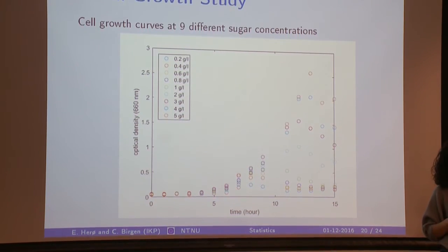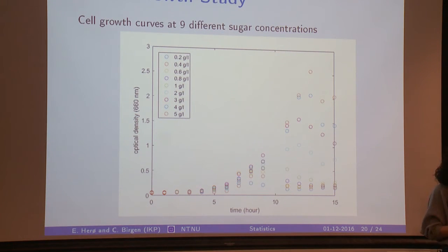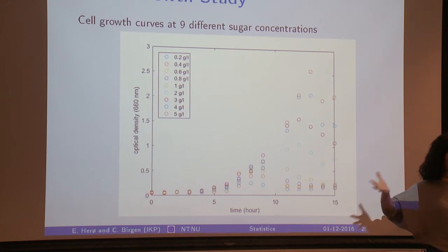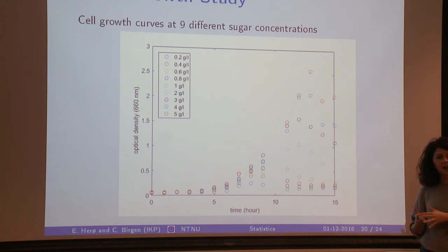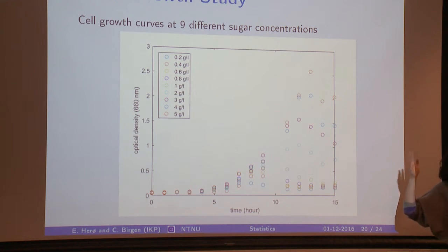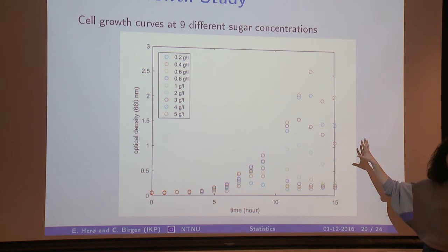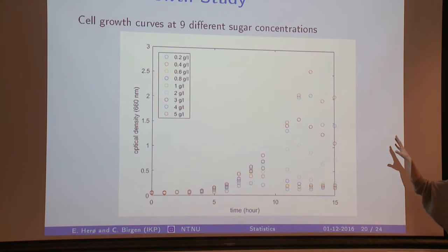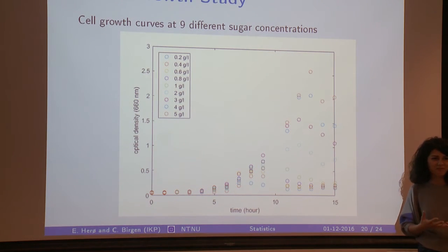I work with biofuels, so the chemicals are produced by cells. Cell growth is very important for my research and I mostly work with them in the lab. To understand how they behave at different sugar concentrations — because they eat the sugar and produce chemicals — I've been doing many experiments. At nine different sugar concentrations I measured their growth over 15 hours, every hour, for nine experiments. I had different initial concentrations so they behave differently. But how am I supposed to quantify their growth and go to modeling from this? By curve fitting.